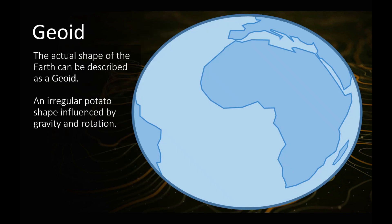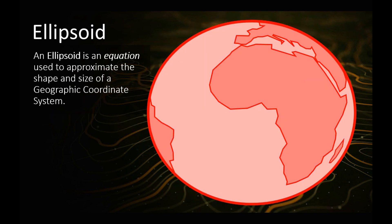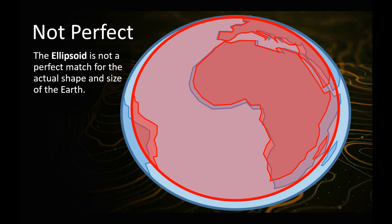So what is a geoid? A geoid is the actual shape of the Earth. It's basically like an irregular, sort of potato shape, which is influenced by gravity and also the rotation of the Earth. An ellipsoid is an equation used to approximate the shape and size of a geographic coordinate reference system — a mathematical equation which basically describes that geoid shape as a geographic coordinate system. It's not perfect, because the geoid is quite a funny shape and it's very difficult to get a perfect approximation of that shape.